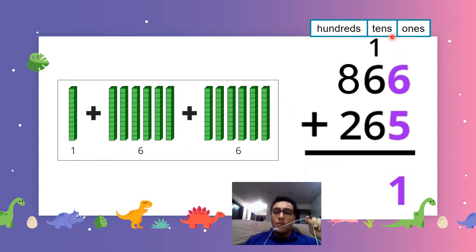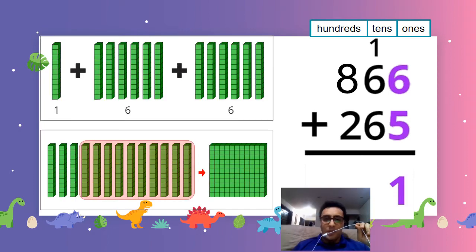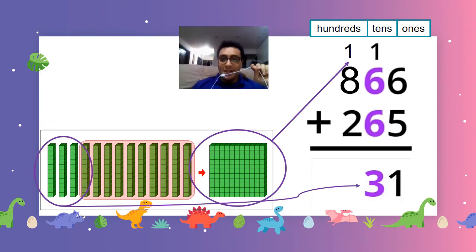Now we have to do the tens. We have three addends. 1 plus 6 plus 6. Hmm. 1 plus 6 is 7. 7 plus 6 is 13. Uh-oh. What do we do? We have 13 tens. We group 10 tens into 100, like this. And we still have three tens left. So we write these three here in the tens, and we bring this 100 up here, like this. See? 3 and 1.